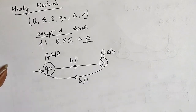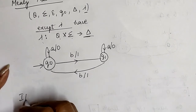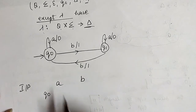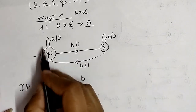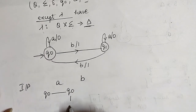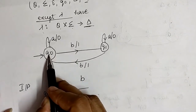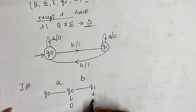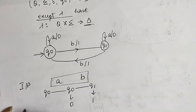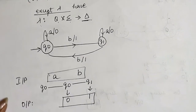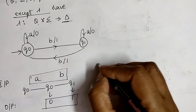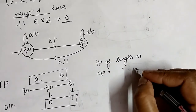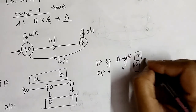If we are providing input a b, what will be the output in the Mealy machine? Initially we are on q0 state. As we see input a, we remain in the same state q0 and the output will be 0. Then on seeing input b on q0, we move to the next state q1 and the output will be 1. So in the Mealy machine if the input is a b then the output will be 0 1. This means if the input is of length n, then the output will also be of length n.